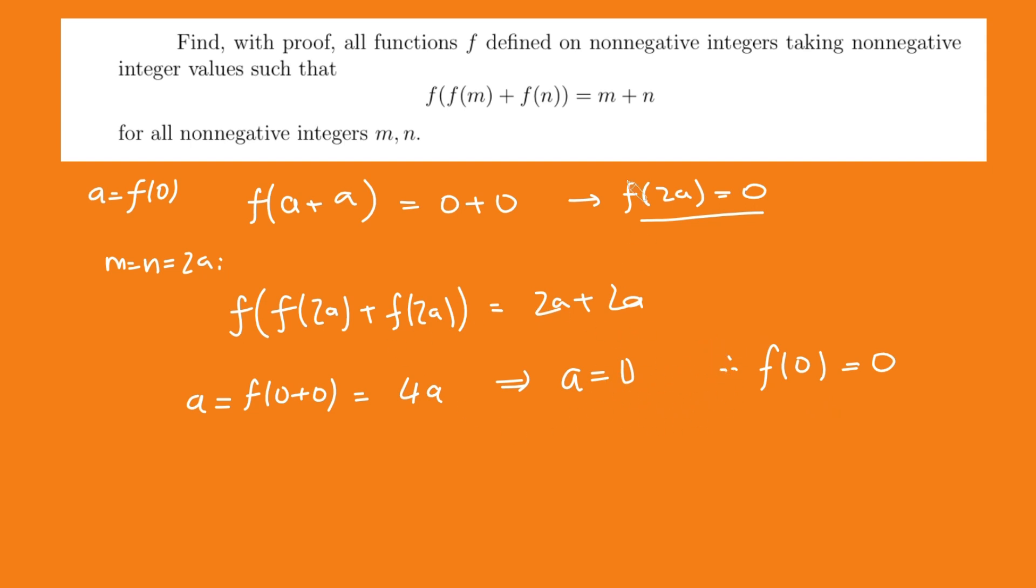So if we plug in maybe n is 0, but keep m the same. So you get f of f of m plus f of 0 equals m plus 0. But we know f of 0 is 0. So I can ignore that. That's just 0. So we get f of f of m equals m. And this is for all non-negative integers m. So we know that if we apply f to the function m twice, we get m again. Amazing.